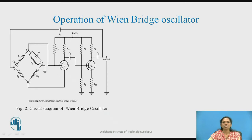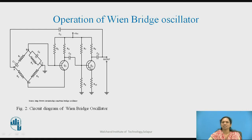Due to the thermal noise of the active and passive elements, noise gets generated in the circuit. That noise gets amplified and is further given to transistor Q2, which amplifies the signal as well as phase shifts it by 180 degrees. This 180-degree plus 180-degree phase-shifted signal, which is now in phase with the input, is provided to the bridge circuit.